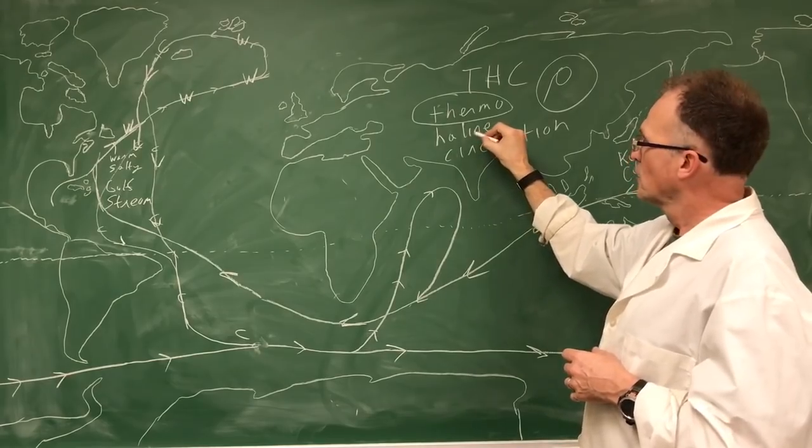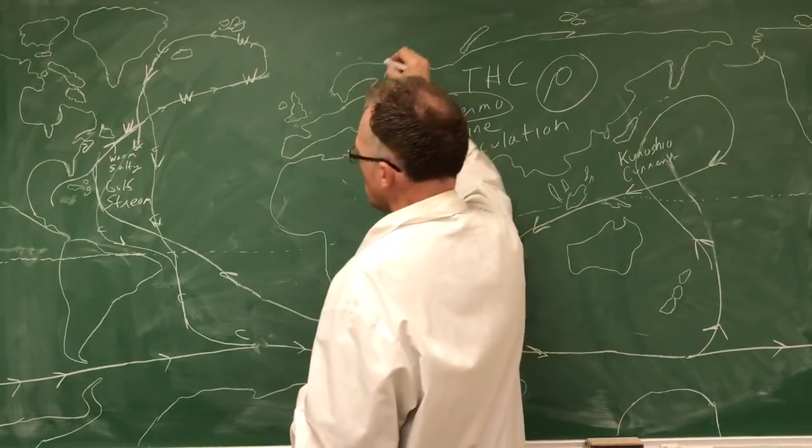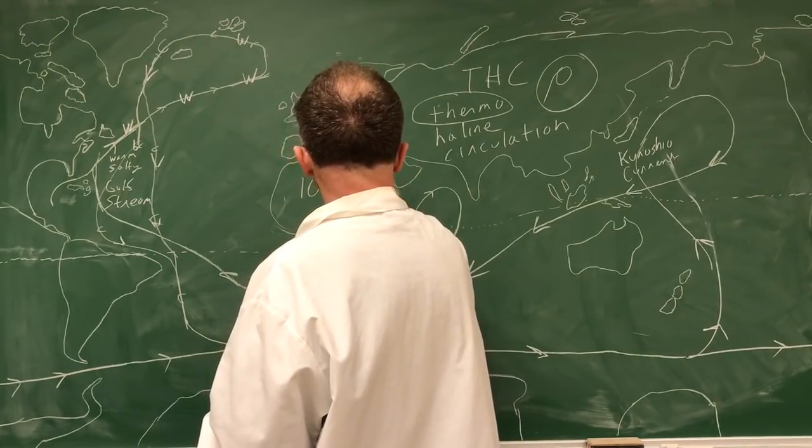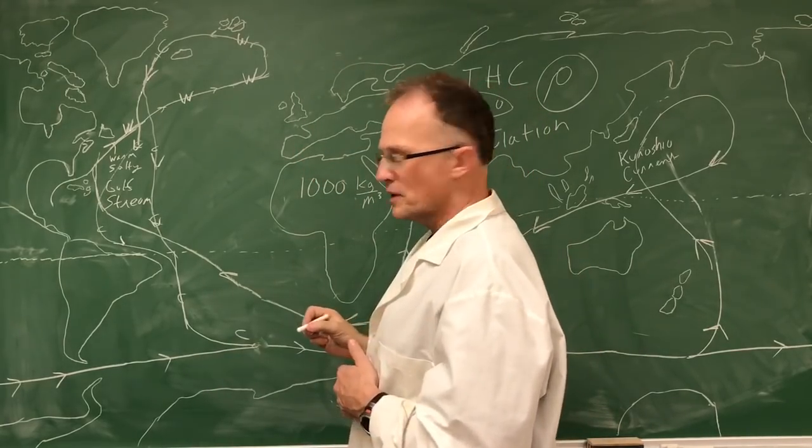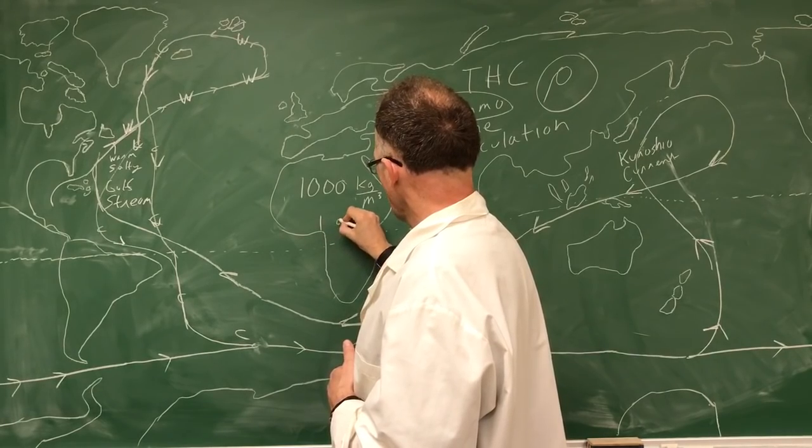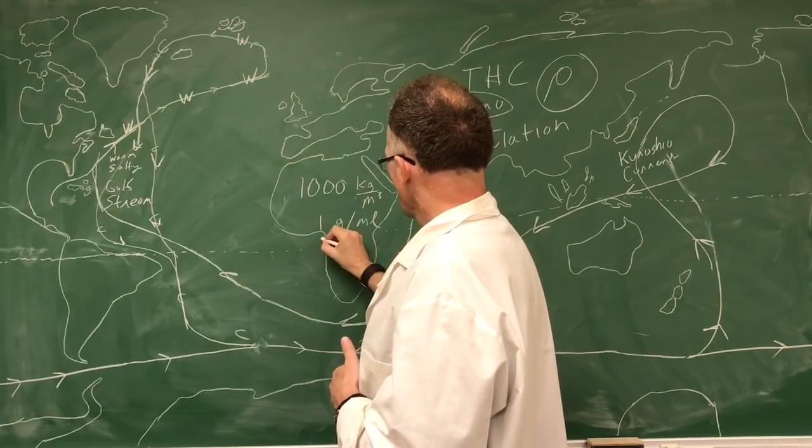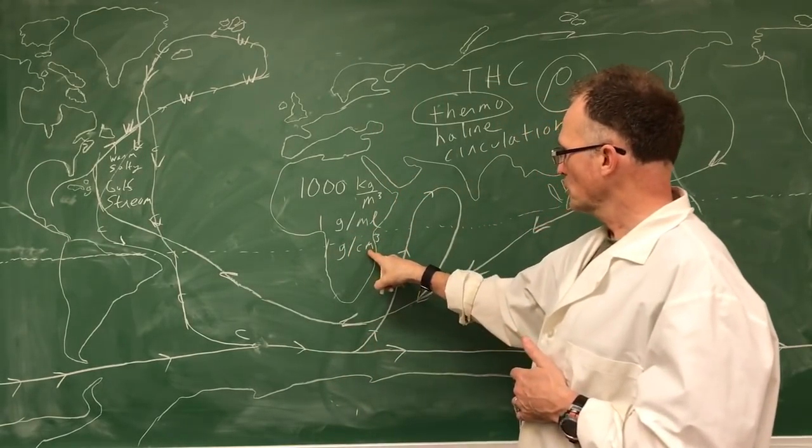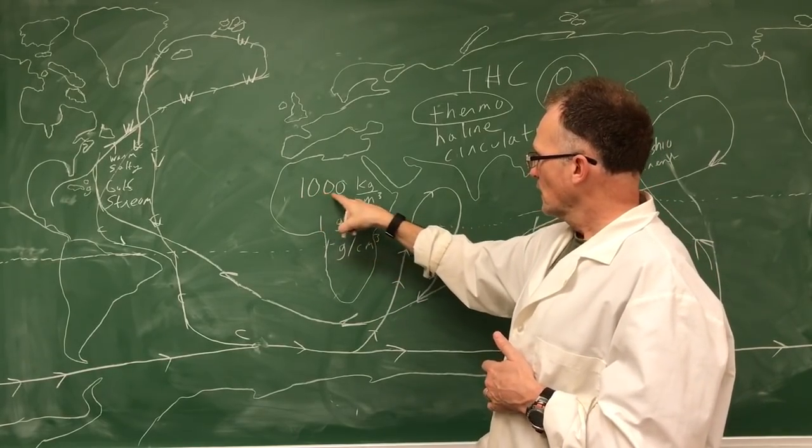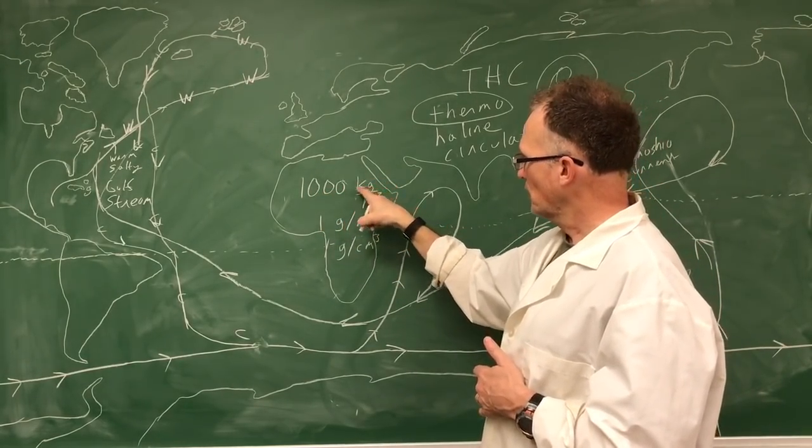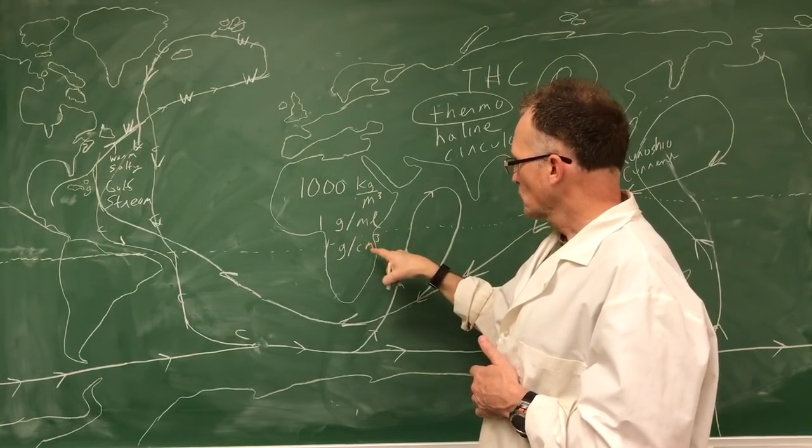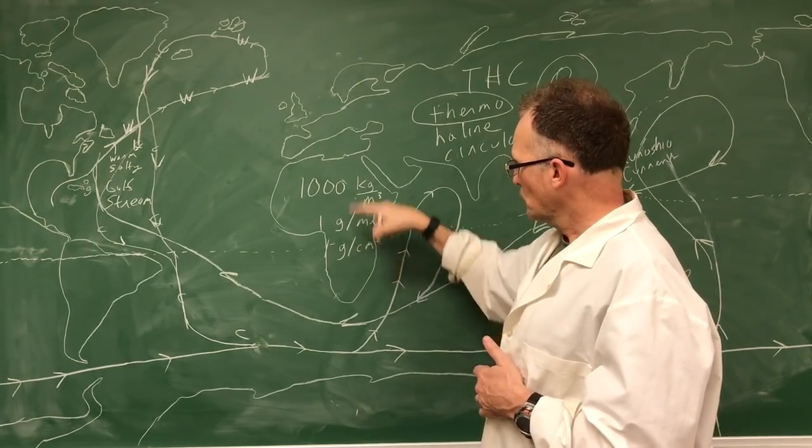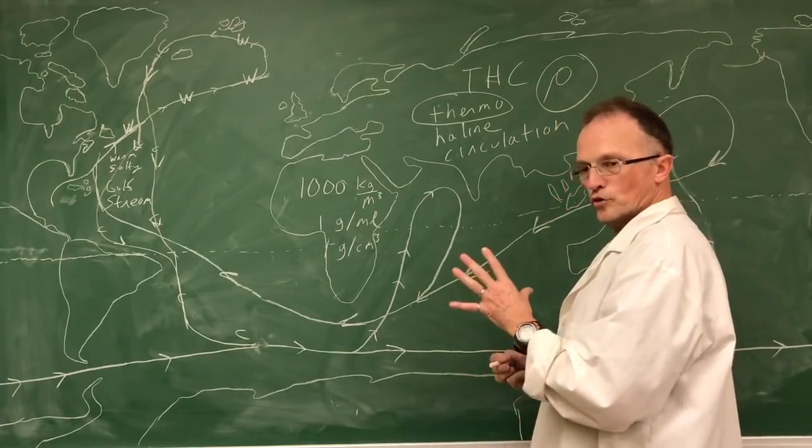Haline is salty. Fresh water is 1,000 kilograms per cubic meter. If you're in chemistry, you'll know it is one gram per milliliter, that's one gram per cubic centimeter. A milliliter is a cubic centimeter. So when you go to the unit, a thousand kilograms, a thousand grams in a kilogram, that gives you 10 to the sixth in the numerator, that gives you 10 to the sixth in the denominator, so that you can do the conversion. So this is fresh water.